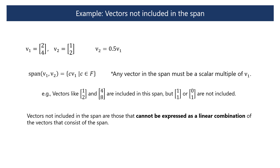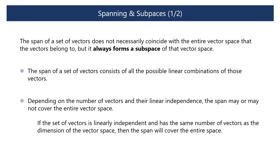In summary, vectors not included in the span are those that cannot be expressed as a linear combination of the vectors forming the span. In the case of a one-dimensional span, any vector that does not lie on that line is not included. The span of a set of vectors does not necessarily coincide with the entire vector space that the vectors belong to, but it always forms a subspace of that vector space. The span consists of all possible linear combinations of those vectors, and depending on the number of vectors and their linear independence, the span may or may not cover the entire vector space.